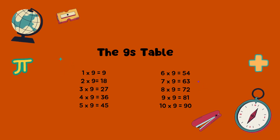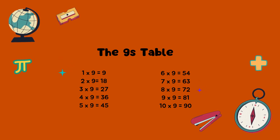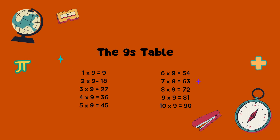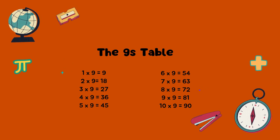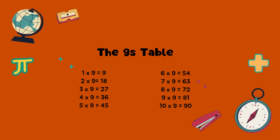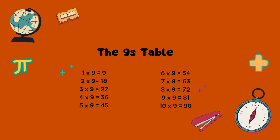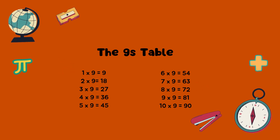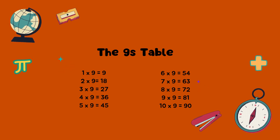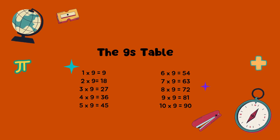7 times 9 equals 63. 8 times 9 equals 72. 9 times 9 equals 81. 10 times 9 equals 90.